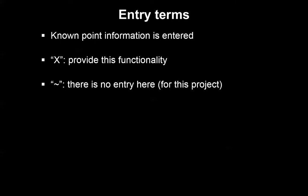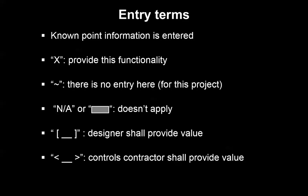So some of these entry terms. Well, the first thing you do is where you know information, where you know what points you want and what some of those set points may be, that would be directly put into the point schedule before it even gets to a designer. Where you see an X on this table, that's indicating that that is functionality that is required. Where you see this tilde symbol, that's indicating that there is no entry here. There could be, but for this project, there is no entry required. Where you see an NA or possibly some shaded box, that's indicating that an entry does not apply to that particular location. But really most important is going to be these brackets. So there's two types of brackets that we see on the point schedule. There's these square brackets, and then the angle brackets. And those are going to indicate who's responsible for putting and recording what information on different parts of this point schedule.